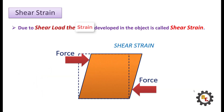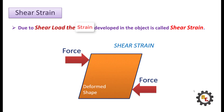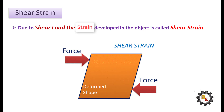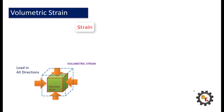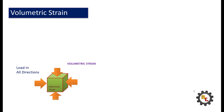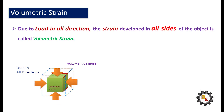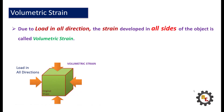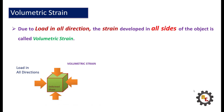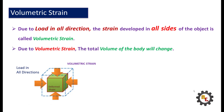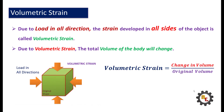And last, volumetric strain. Due to load in all directions, the strain developed in all sides of the object is called volumetric strain. Mathematically, volumetric strain is the ratio between change in volume to original volume.